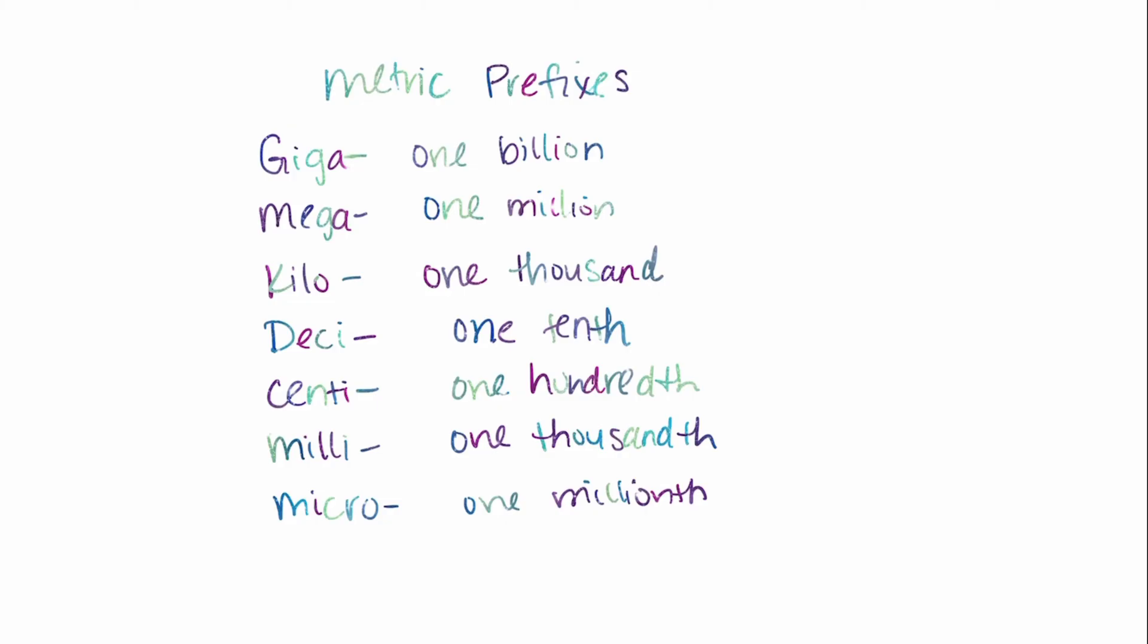All right, so let's look at a couple practice problems now. So the first conversion that we're going to do is 80 ounces to pounds. So first, we should ask ourselves, are we converting from standard system to metric system? The answer here is no, because ounces and pounds are both standard system measurements.